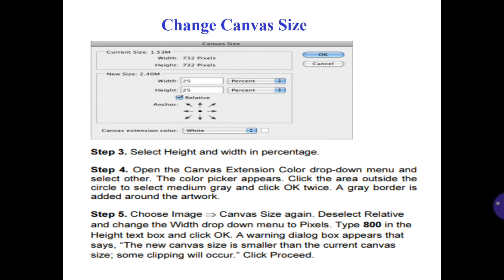Step number 5: choose Image, then Canvas Size again. Select Relative and change the width drop-down menu to pixels. Type 800 in the height box and click OK. A warning dialog box appears saying the new canvas size is smaller than the current canvas size and some clipping will occur. Click Proceed.